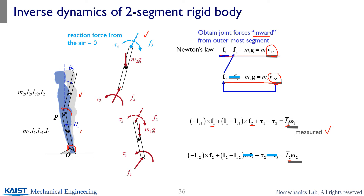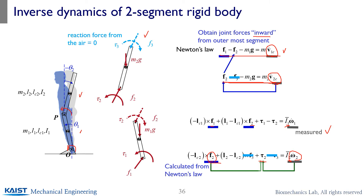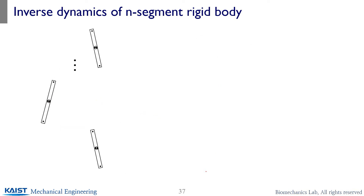The same approach applies to the moment equation. You have unknowns for the torques and the forces; however, the forces have already been solved from Newton's law using inverse dynamics, so they are known values. From your measured values and your estimated forces, you can figure out the torque at the hip joint and pelvic joint, and by plugging that value in, you can figure out the ankle torque. It's an inward manner — from your outermost segment, calculated one by one by iteration.